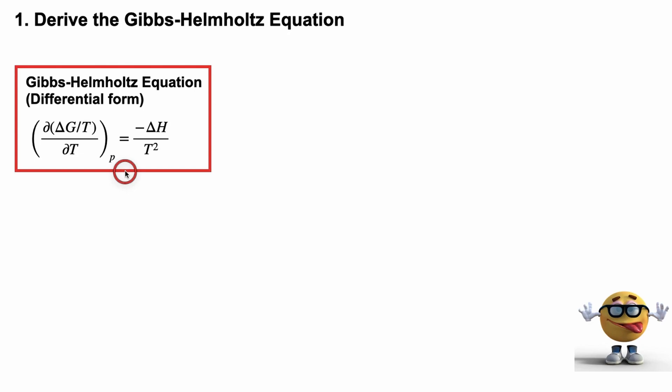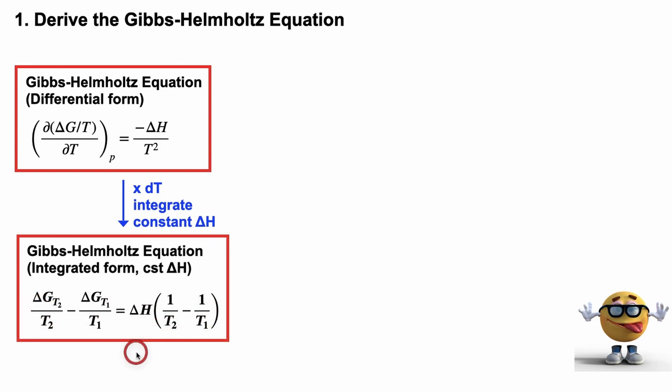But it's not the most useful form for us generally. We like to integrate it. So we're going to multiply both sides by dT to separate the variables, integrate, and if we assume that delta H is constant, so it's not constant, it does change depending on, it does vary with temperature, but for a short temperature range and honestly for most of your exam problems, delta H will be constant unless you have an equation for it, so it comes out of the integral. And if you do that, then we're left with this part right here, which is the more useful, for us, integrated form of the Gibbs-Helmholtz equation right here.